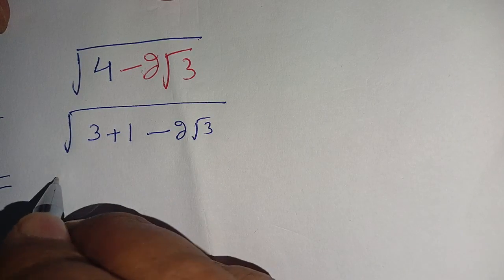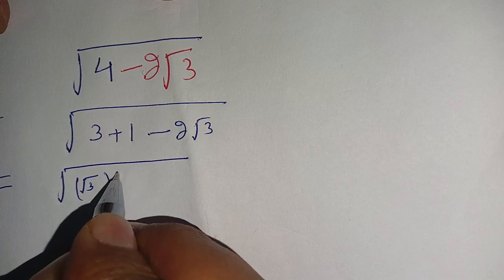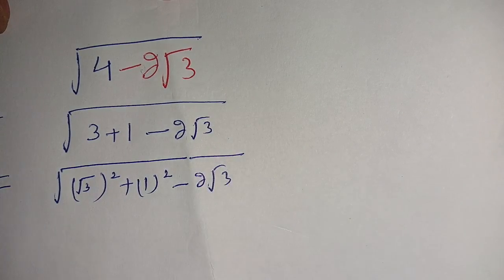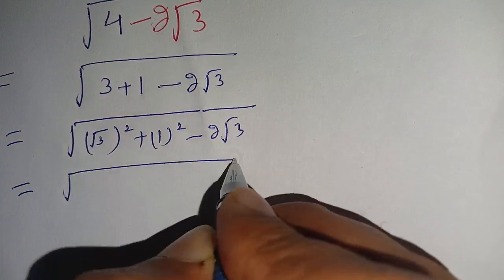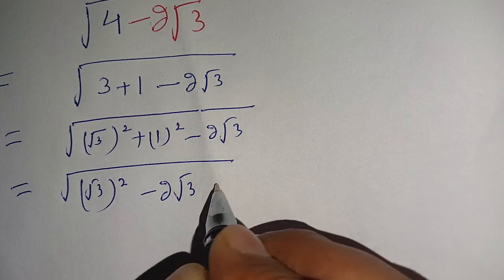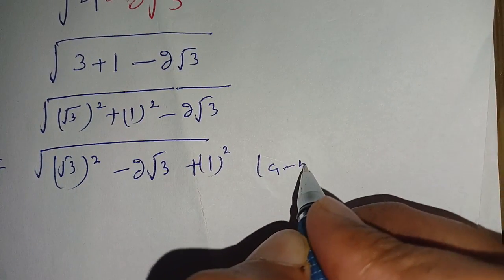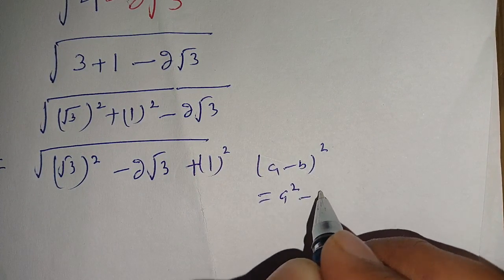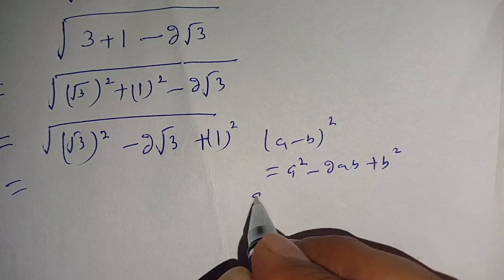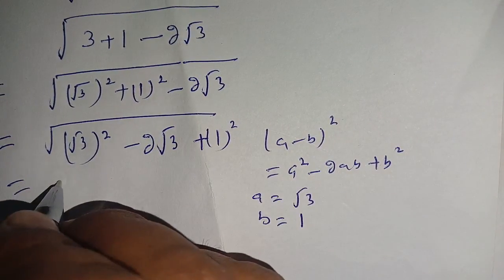We further modify it: square root of 3 can be written as (√3)², and 1 can be written as 1². So we can write this as square root of (√3)² minus 2·√3 plus 1². We know that (a minus b)² is equal to a² minus 2ab plus b². Here, a is equal to square root of 3 and b is equal to 1, so this formula is applicable.